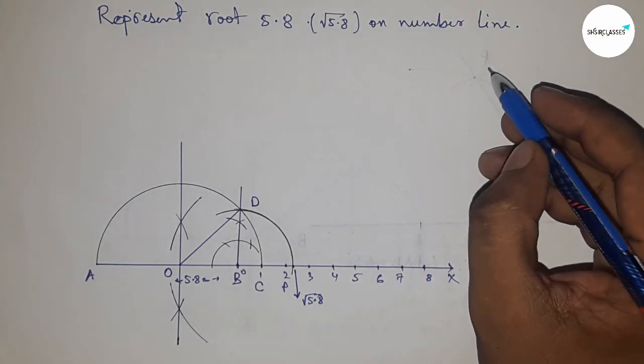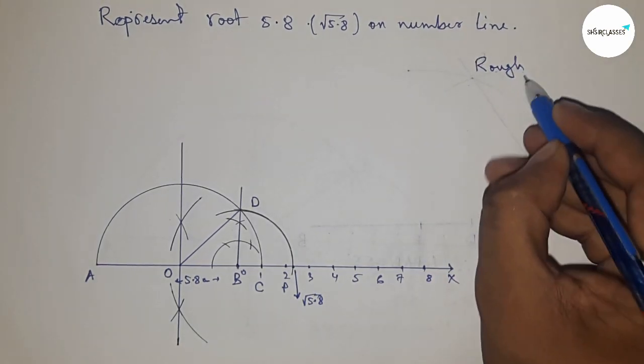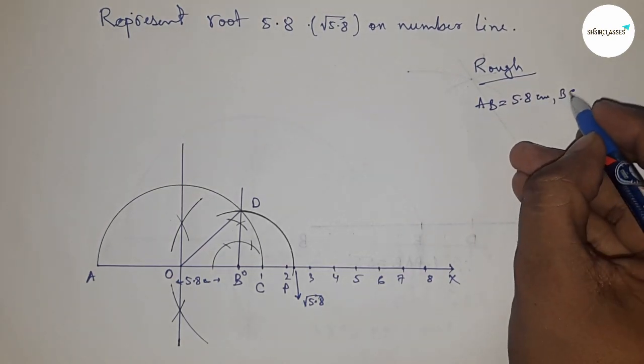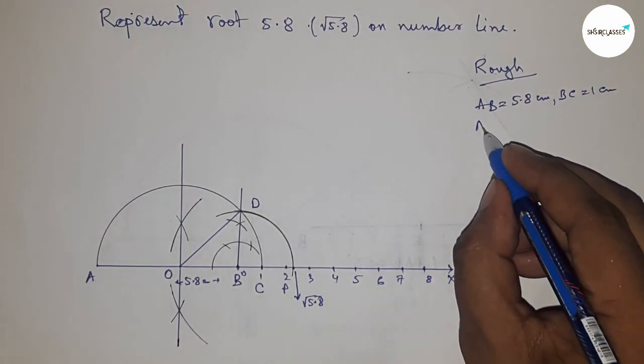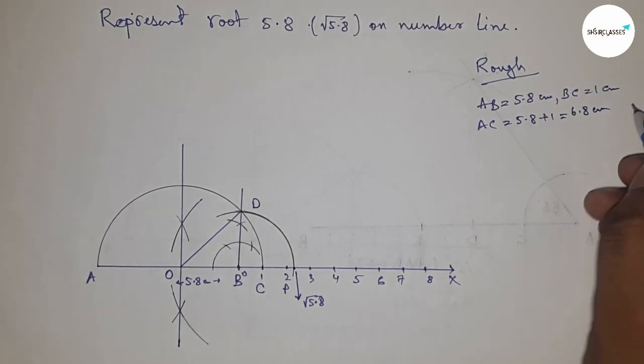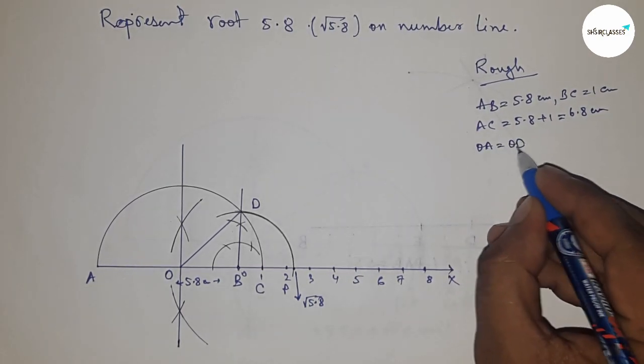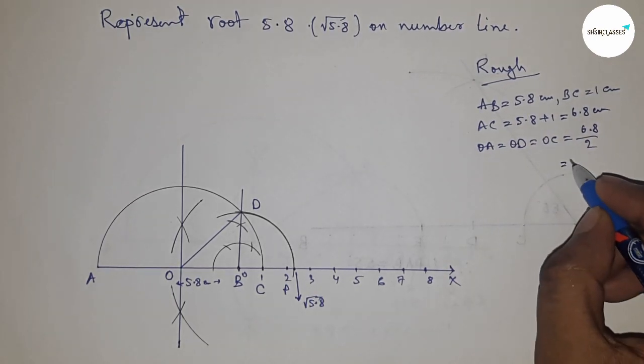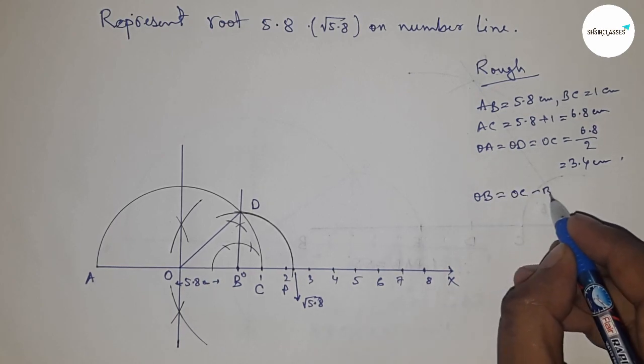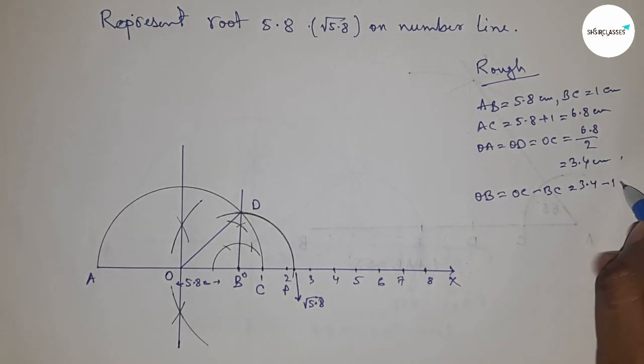Next, let's discuss the calculation of root 5.8. Given AB equals 5.8 and BC equals 1 centimeter, so AC equals 5.8 plus 1 equals 6.8 centimeters. The radius OA equals OD equals OC equals 6.8 divided by 2, which is 3.4 centimeters. Now OB equals OC minus BC, so putting the values of OC and BC, this is 2.4 centimeters.